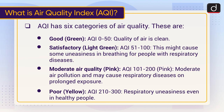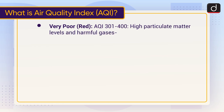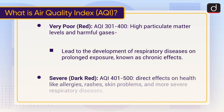The fourth category is Poor (yellow), AQI 201–300: causing respiratory uneasiness even in healthy people. The fifth is Very Poor (red), AQI 301–400: high particulate matter levels and harmful gases which lead to development of respiratory diseases on prolonged exposure — known as chronic effects. The sixth is Severe (dark red), AQI 401–500: direct effects on health like allergies, rashes, skin problems, and more severe respiratory diseases.